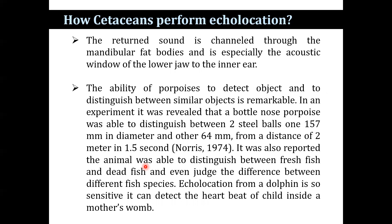The ability of porpoises to detect objects and distinguish between similar objects is remarkable. In one experiment, a bottlenose porpoise was able to distinguish between two steel balls — one 157 mm in diameter and the other 64 mm — from a distance of 2 meters within 1.5 seconds. Animals were also able to distinguish between fresh fish and dead fish, and even judge differences between different species. Echolocation in dolphins is so sensitive that it can detect the heartbeat of a child inside their mother's womb.